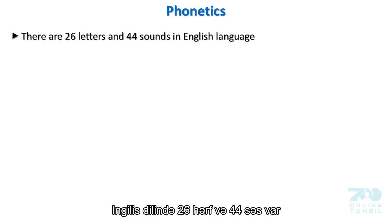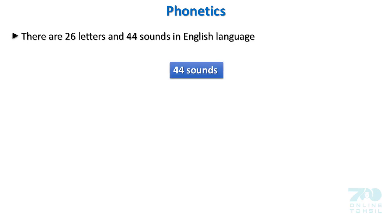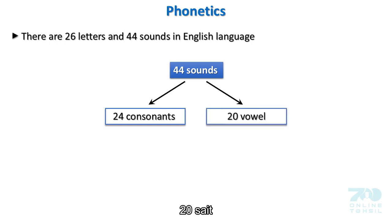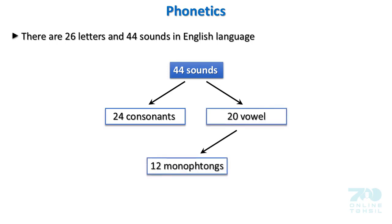There are 26 letters and 44 sounds in the English language. 44 sounds consist of 24 consonants and 20 vowels. 20 vowels consist of 12 monophthongs and 8 diphthongs.